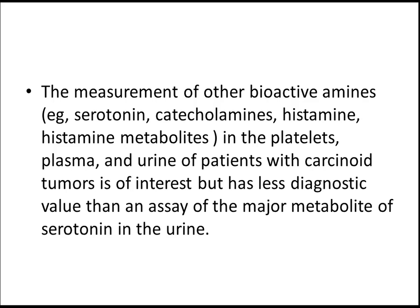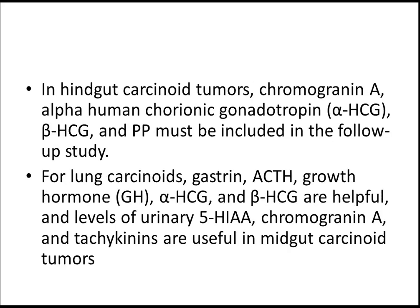Measurement of other bioactive amines like serotonin, catecholamines, histamine, and histamine metabolites in platelets, plasma, and urine has diagnostic interest but less value than urinary 5-HIAA. For hindgut carcinoid tumors, chromogranin A, alpha-HCG, beta-HCG and PP should be included in follow-up. For lung carcinoid, gastrin, ACTH, growth hormones, alpha and beta-HCG are helpful. Urinary 5-HIAA, chromogranin and tachykinins are useful in midgut carcinoid tumors. Urinary 5-HIAA is key for USMLE Step 1; the rest are important for Step 3.